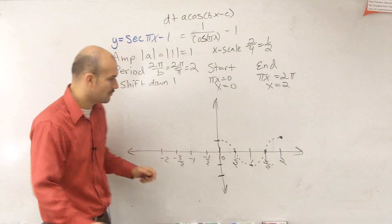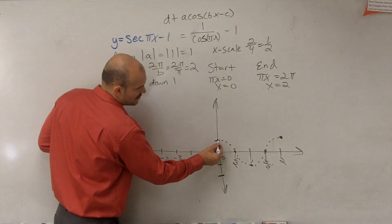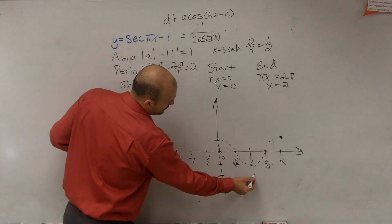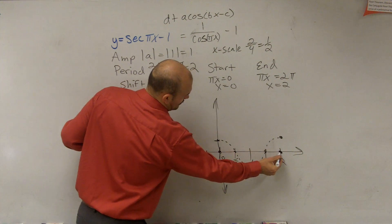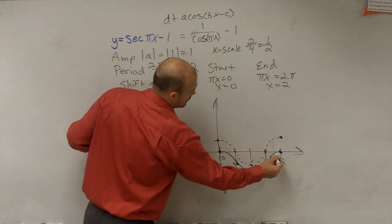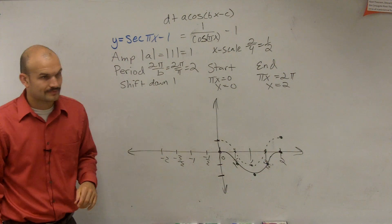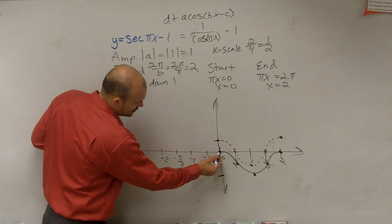But let's actually graph what we got to shift this down, right? So that means I'm just going to move every point down one unit. So really, the cosecant graph is going to look something like this. Really, that's what the cosecant graph looks like.